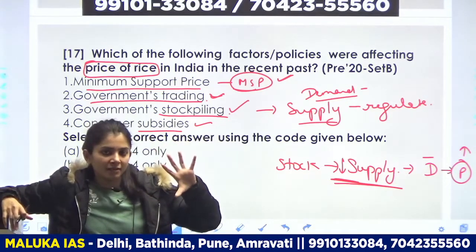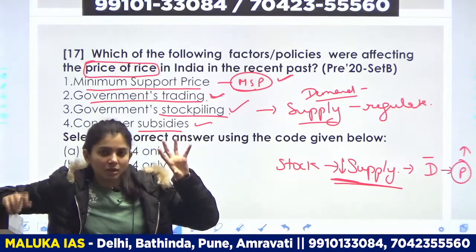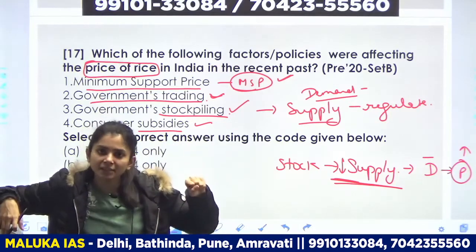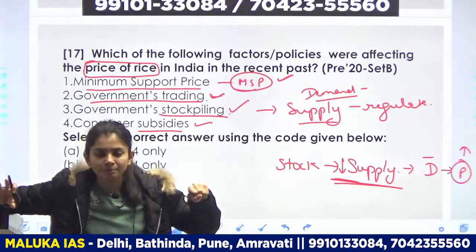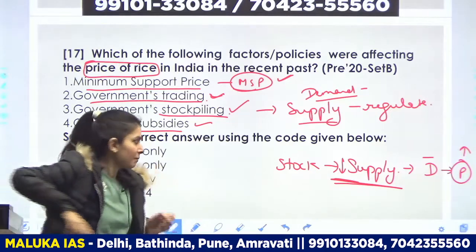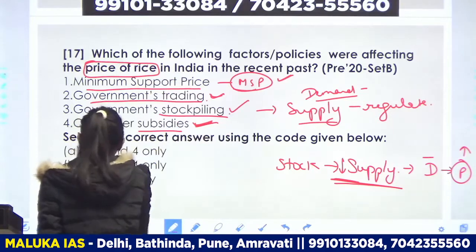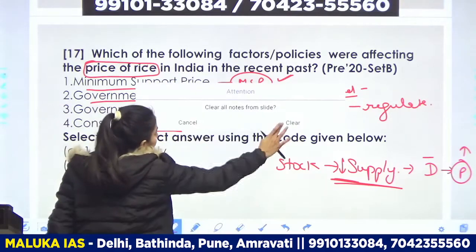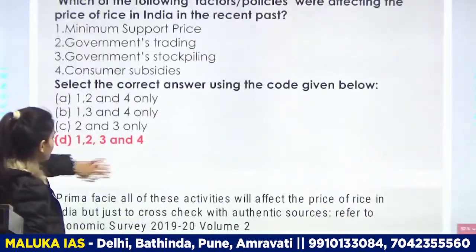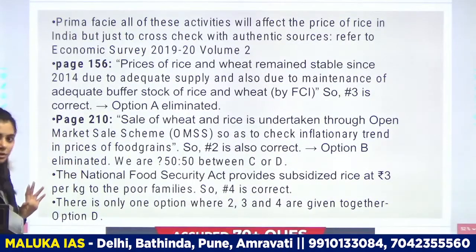Maano government ek subsidy provide karwa rahi hai us particular crop ki — jo amount thi 100 rupees, but government bol rahi hai 50 rupees main de deti hoon aapko, aap consumer ko sirf 50 mein dijiye. Toh subsidy ki wajah se market price kya hua — market price kam ho gaya. Jab market price kam hua, price par effect aaya. Toh all the points — 1, 2, 3, and 4 — yeh sab effect karte hain. So yeh ho jaata hai hamara answer: 1, 2, 3, and 4.